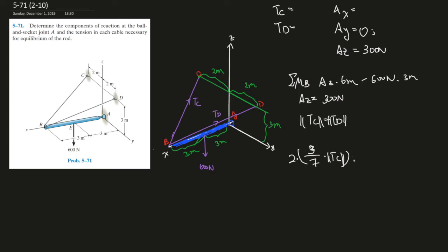If we say the sum of the forces in z, going upwards is positive. Well then going negative is the 600 newtons, and going positive is the 300 newtons which is calculated from Az. Then solve for magnitude of TC. That's the only force we're trying to solve, the only unknown. Plug everything into your calculator, should give you 350 newtons.